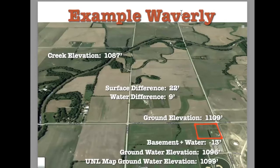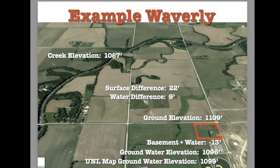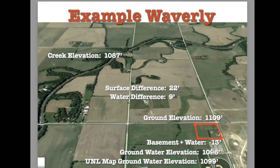A good example: I did a project in Waverly, on the north side. Salt Creek winds its way to the north side, and the red box area is where I did my investigation. There's a pond and the house is a little gray structure right there. I was able to show on this image how I do my calculations. The creek elevation is around 1087, and the basement or ground elevation at the house is 1096. According to the UNL ground map, the ground elevation is 1109 — so we're about 22 feet above the creek. According to the UNL groundwater maps, the water elevation showed at 1099, and I measured it that day at 1096, so they are pretty close.